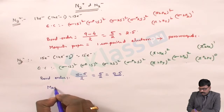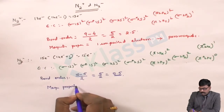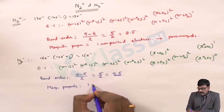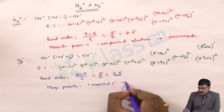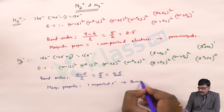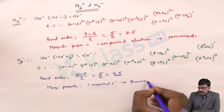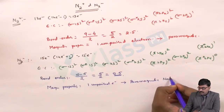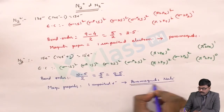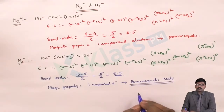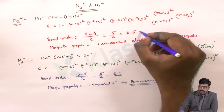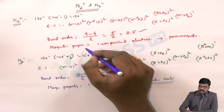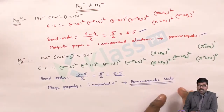For the magnetic property of N2 minus: it has one unpaired electron, so it is paramagnetic in nature. In this way, for ions also we can write the molecular orbital diagram and determine the bond orders and magnetic properties of a given ion.